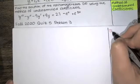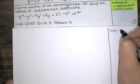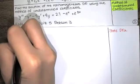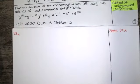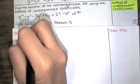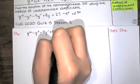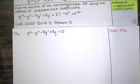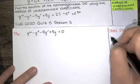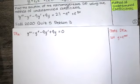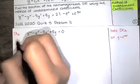The first thing to do is state the corresponding homogeneous differential equation. I'm using the notation DE sub h to refer to that corresponding homogeneous equation. Since this homogeneous differential equation has constant coefficients, we're going to let y equal e to the mx and then find the values of m that cause this function to satisfy this differential equation.